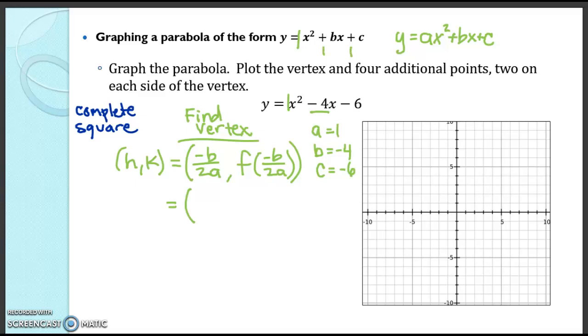So what's negative b over 2a? That's going to be a positive 4, negative of negative 4, over 2 times 1. And then we're going to take f of whatever we get there. 4 divided by 2 times 1 is a positive 2, and then we're going to find f of 2.